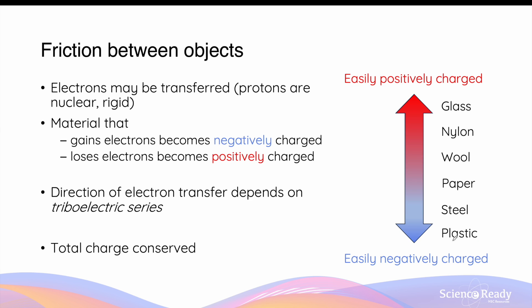During this transfer of charges through friction, the total amount of charge remains constant or conserved. Regardless of which material becomes negative and which becomes positive, if you add the total charges of the two objects together, there should be no difference before and after rubbing them together. This is known as the conservation of charge.